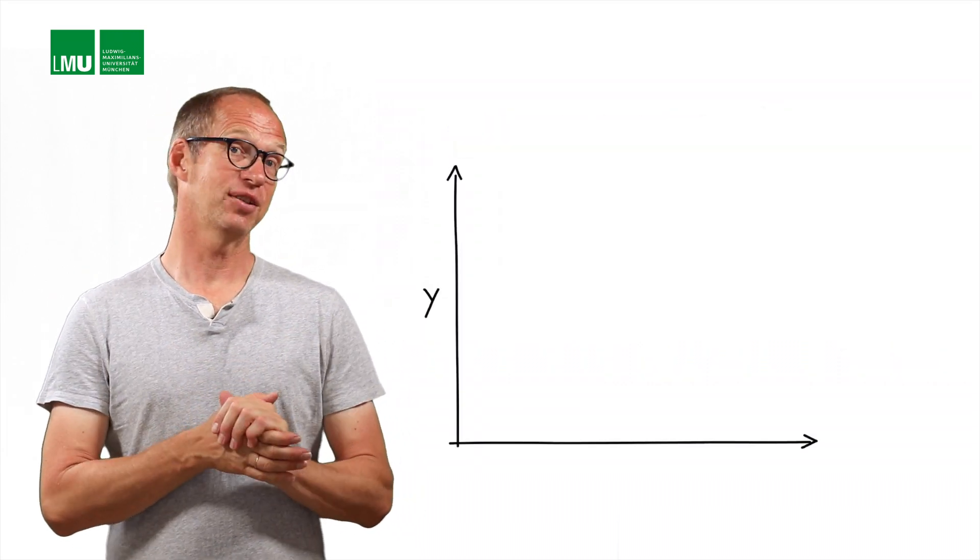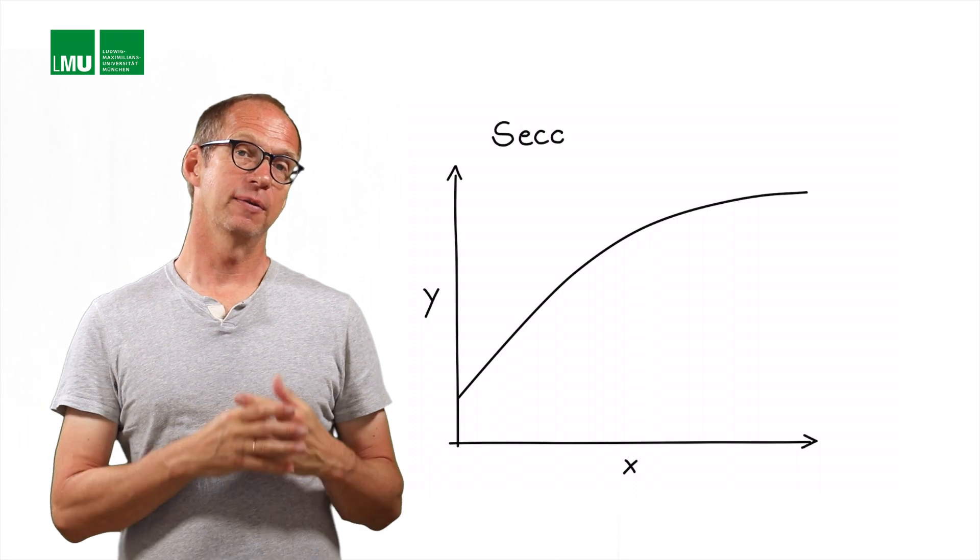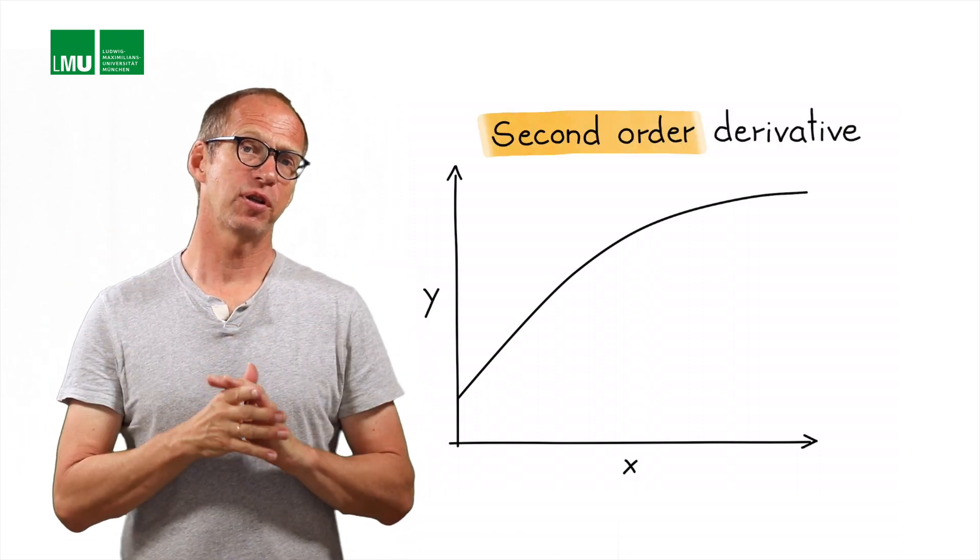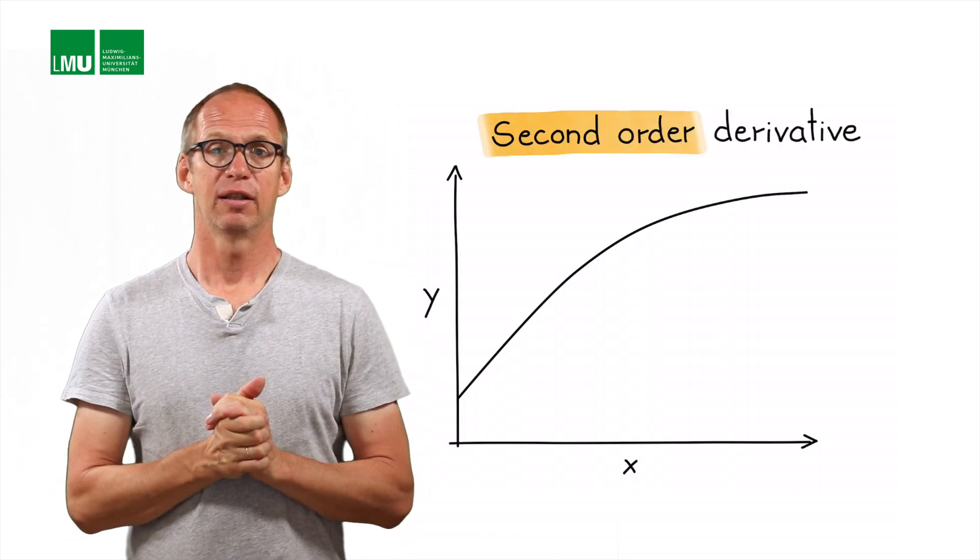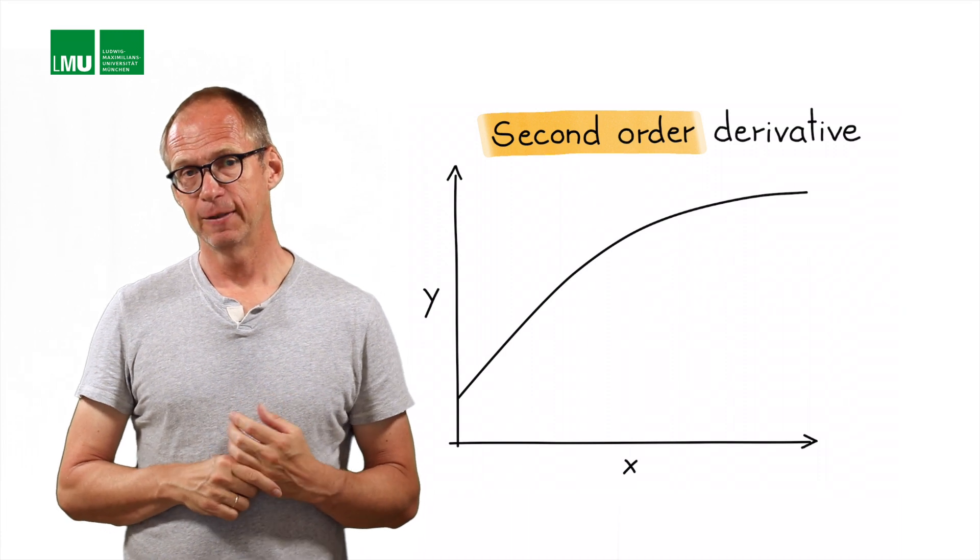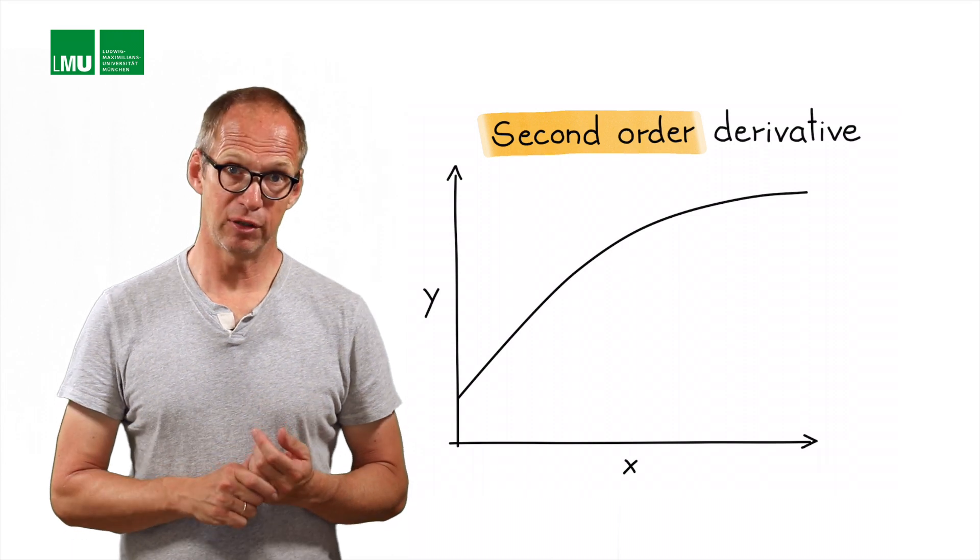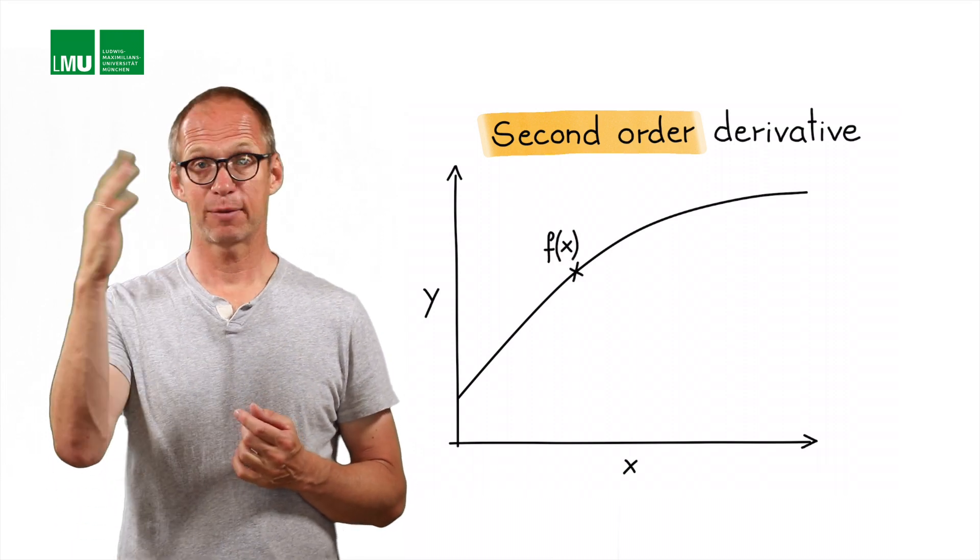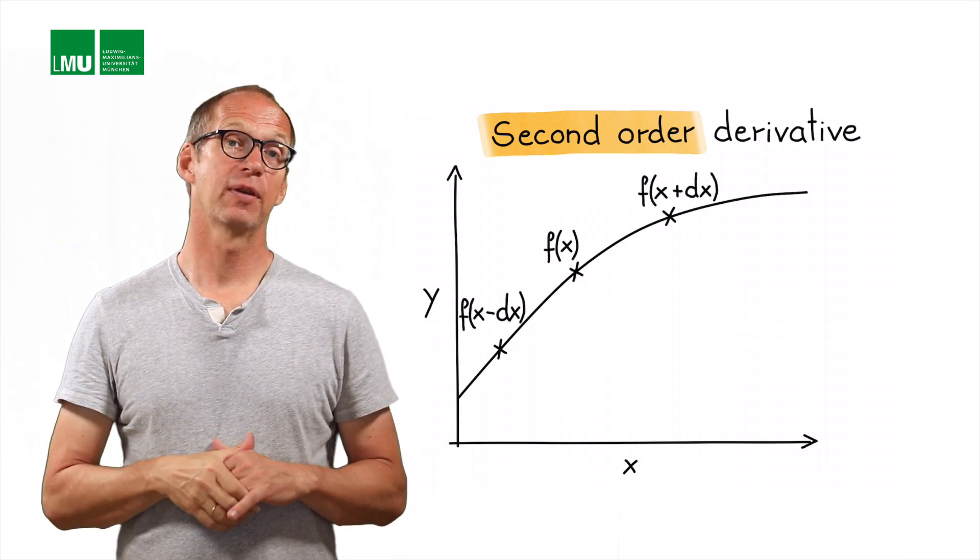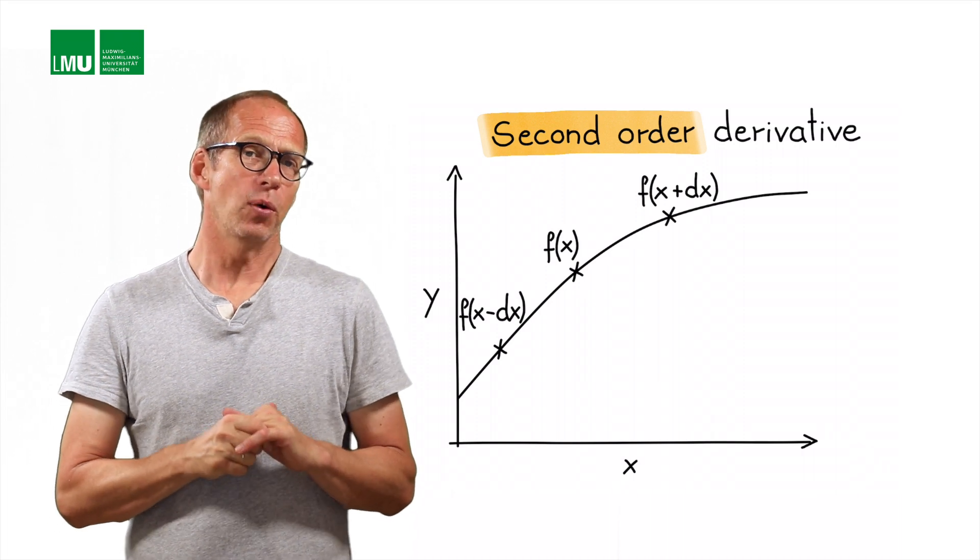Let's start with a second derivative. Again, let's go to a simple case: we have a function which is shown here. We now know how to estimate the first derivative at points x, x plus dx, or x minus dx.